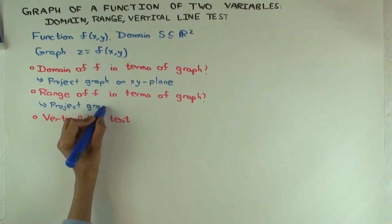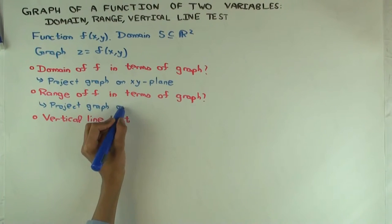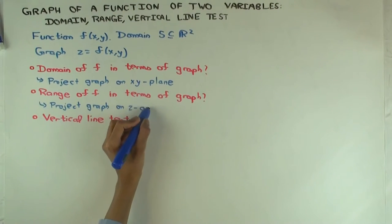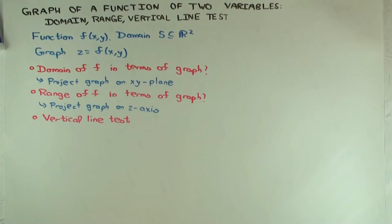So you can always go back and think of functions of one variable and how you do things there and then just carefully generalize to multiple variables. In this case, just two variables. So for functions of one variable, you project the graph on the x-axis and get the domain and you project the graph on the y-axis to get the range.